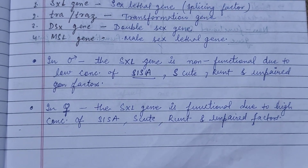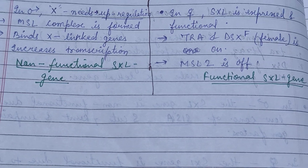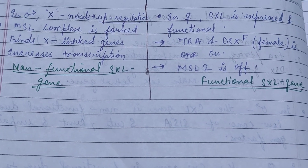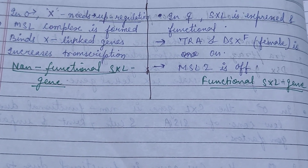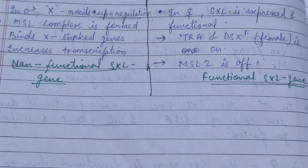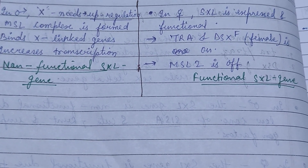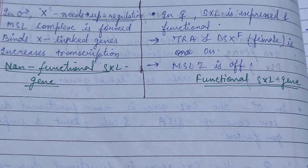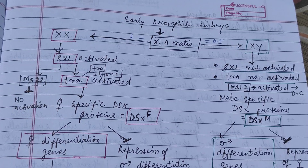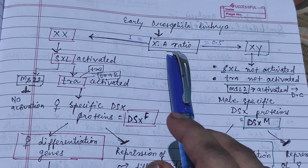In males, the Sxl gene is non-functional, while in females it is functional. In males, the X needs upregulation, while in females the Sxl gene is expressed and functional. In males, the MSL complex is formed and binds X-linked genes, increasing transcription. In females, the tra and dsx genes are on, while MSL2 is off. Here is a chart of dosage compensation in the Drosophila embryo.